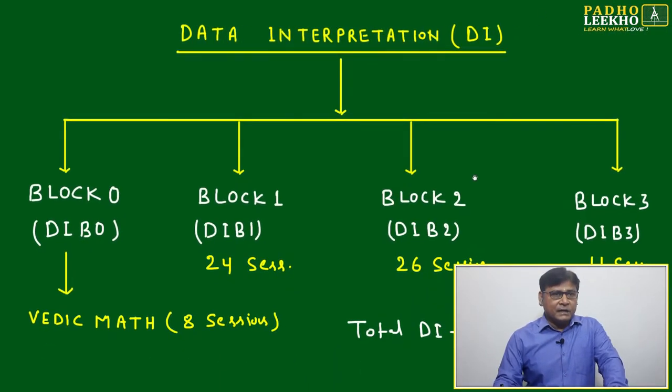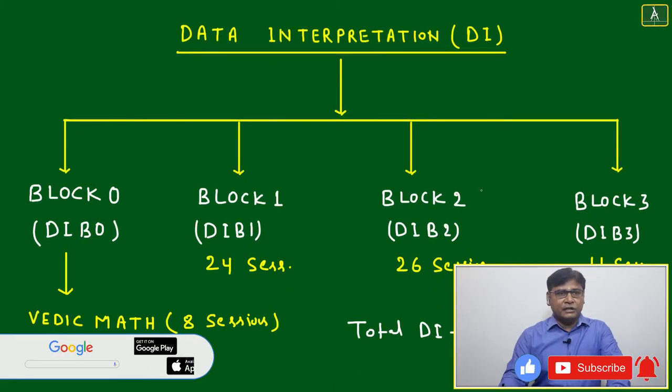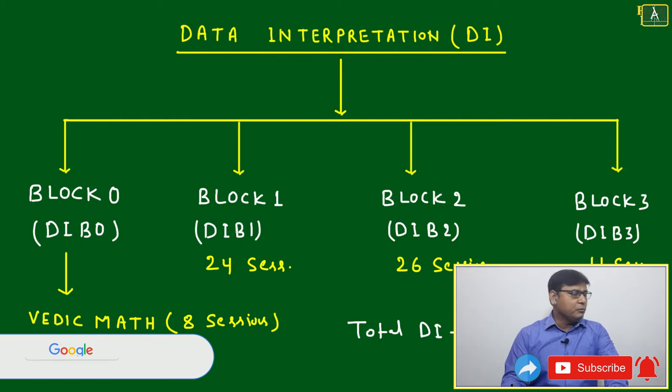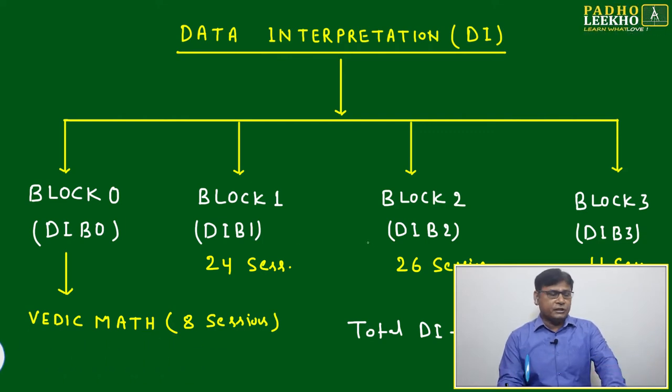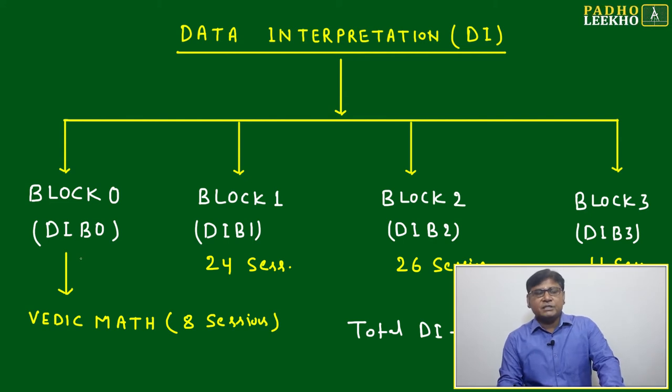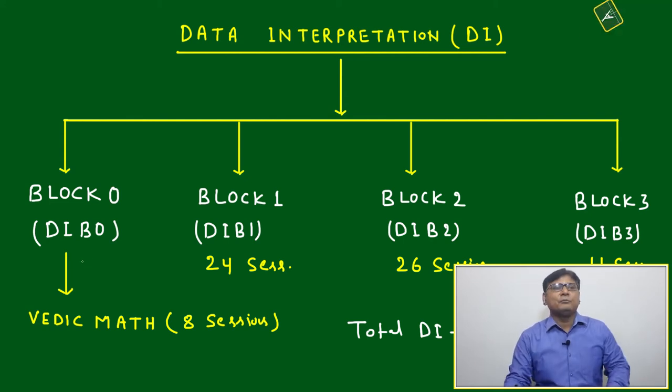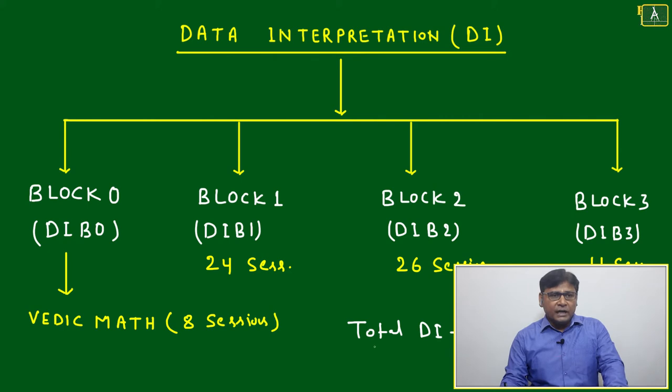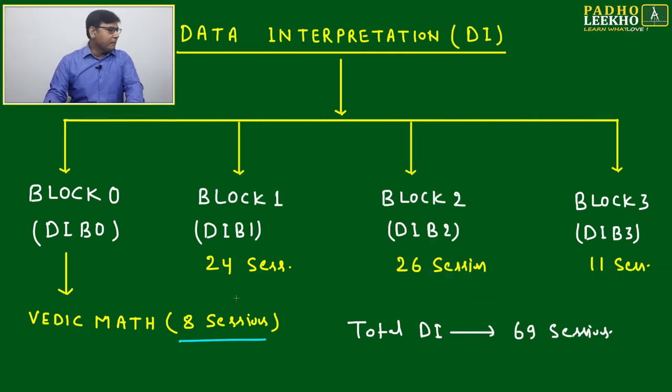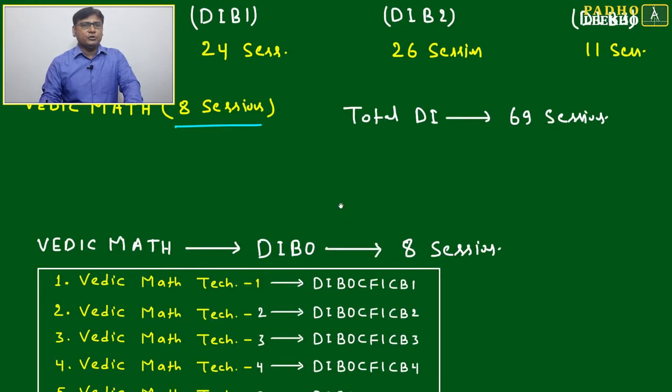Today's session follows this structure you're already aware of. Data interpretation is divided into four blocks: block zero, block one, block two, and block three. We are doing block zero, which is your fundamental preparation or below CAT level preparation. There are eight sessions related to Vedic Math, and apart from that, blocks one, two, and three have 69 sessions combined to complete your DI.